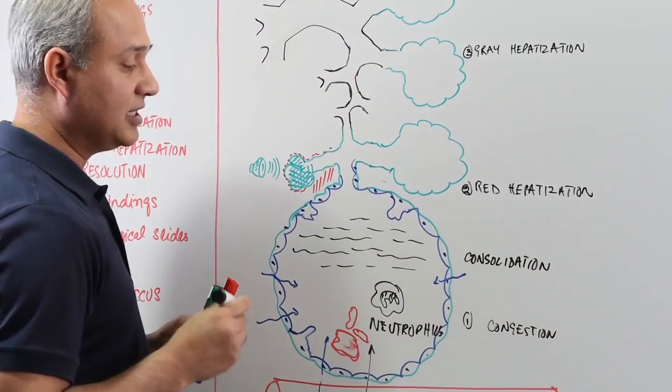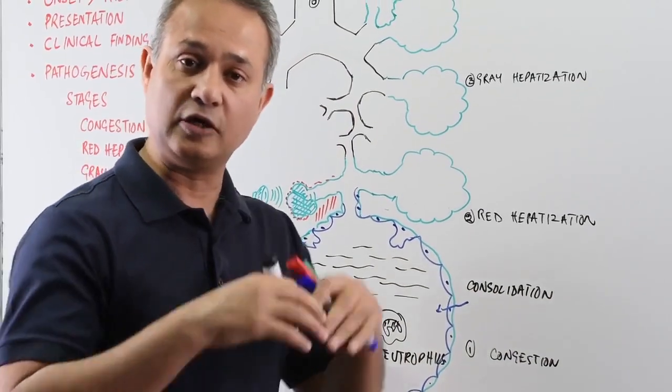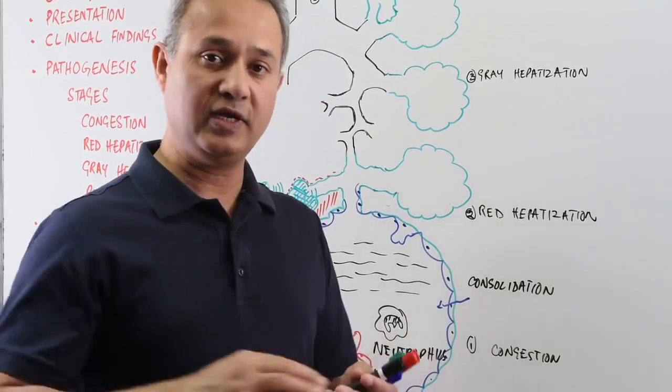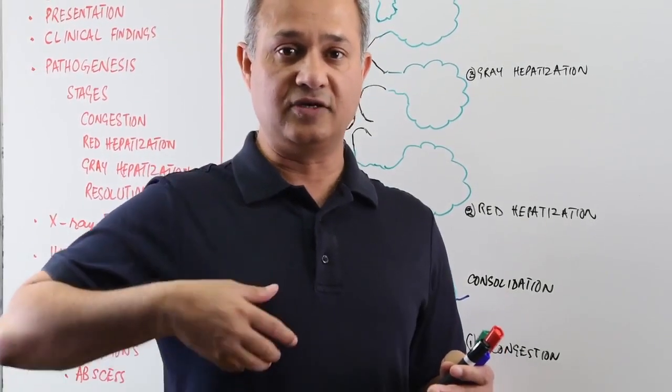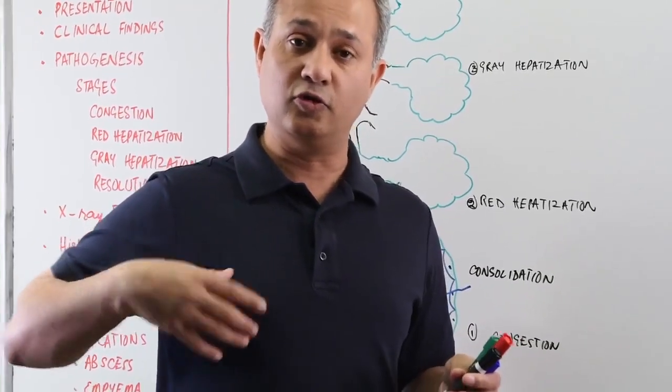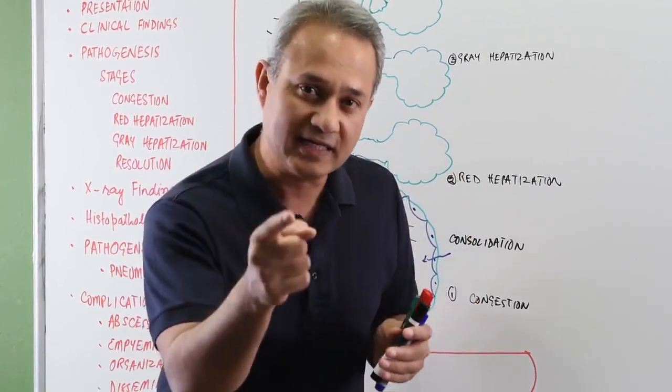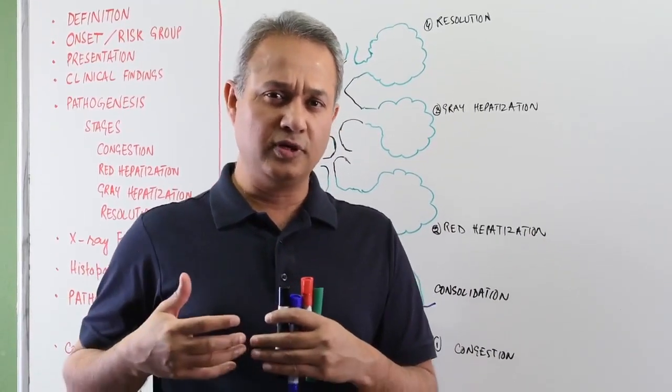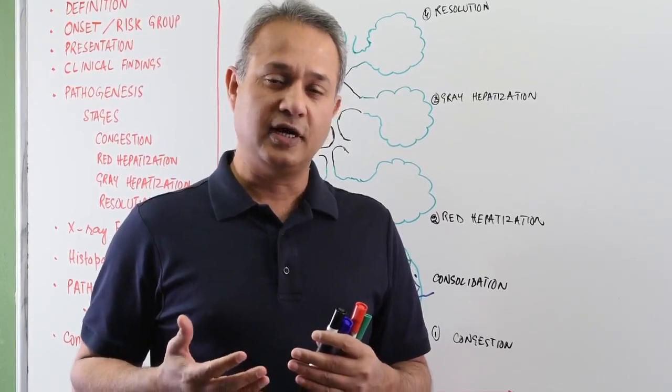Now if this consolidation happens for one complete lobe, then this will be called lobar pneumonia. And normally the right lower lobe and right middle lobe, lower part of the middle lobe is mostly involved. Guess why? Why would the right lower lobe and middle lobe be involved?